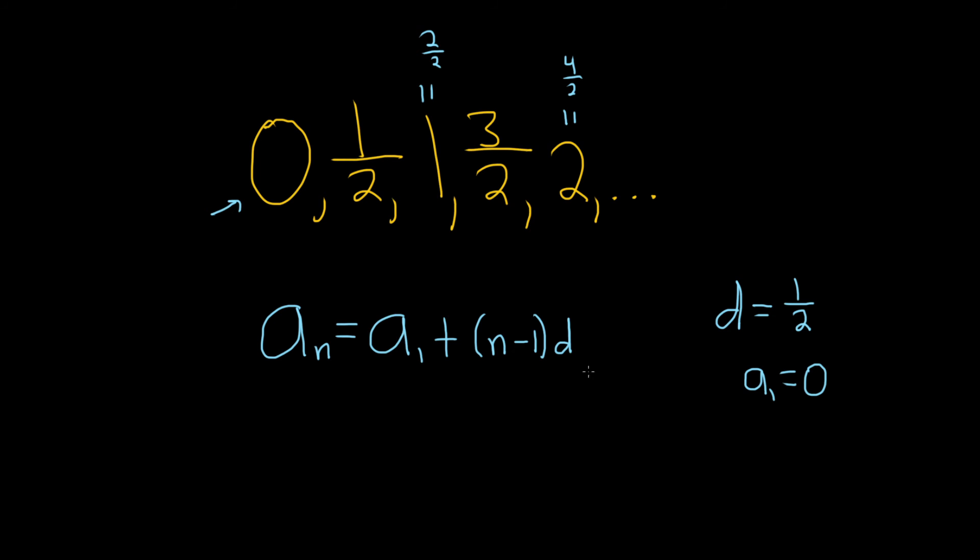Okay, so now all we have to do is plug everything into this formula. So a sub n is equal to a sub 1, which is 0, plus n minus 1. So that'll just be n minus 1. And then d is 1 half.